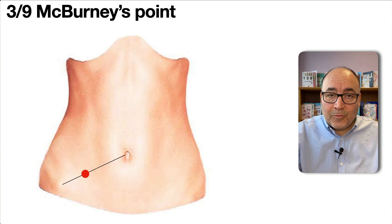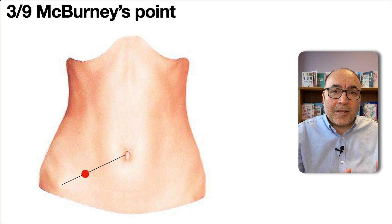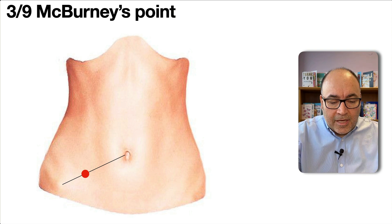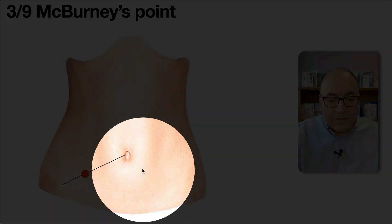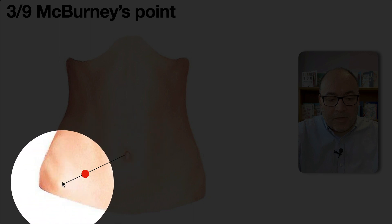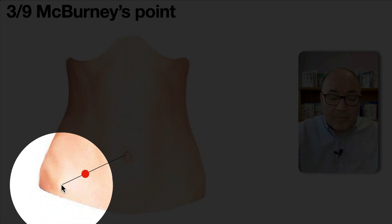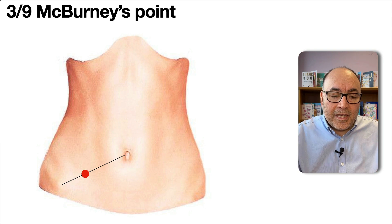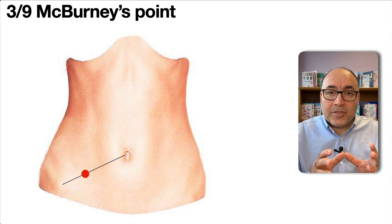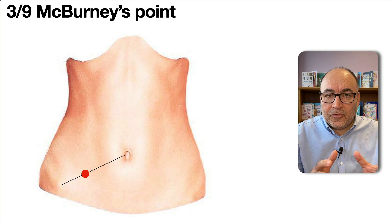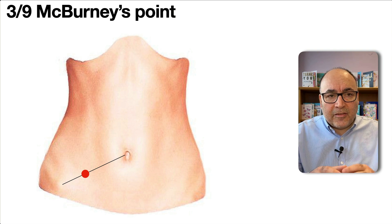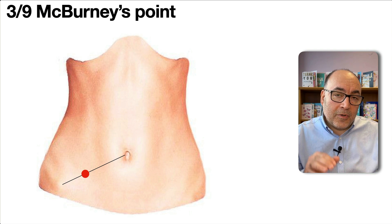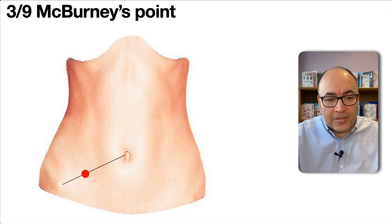Speaking of McBurney's point, this is a very useful landmark in appendicitis. If you draw a line from the umbilicus to the anterior superior iliac spine — the palpable part of the bony hip — the point at the one-third to two-thirds junction of that line is McBurney's point. That's roughly where the appendix is located and where the patient would be maximally tender in appendicitis.